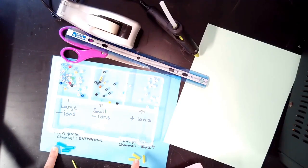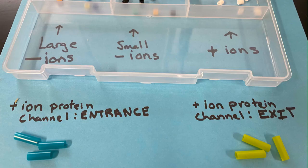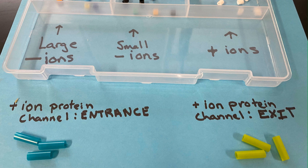And these, a different color, you should have three of them, are the positive ion protein channels that allow positive ions to exit. So we have entrance proteins and we have exit proteins.